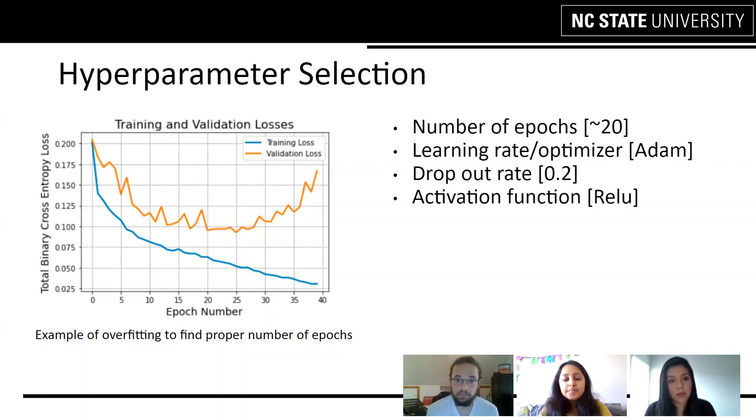We tested several different dropout rates, and we did not see any significant improvement if we used anything higher than 0.2, so we just stuck with 0.2.